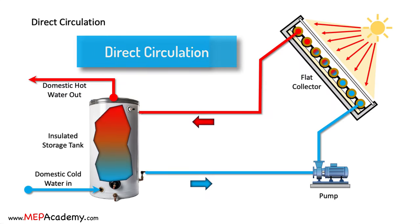Direct circulation systems, also known as open-loop systems, involve the direct transfer of water from the collector to the end-use application without an intermediate heat transfer fluid. This simplicity makes them suitable for regions with mild climates where freezing is not a concern.